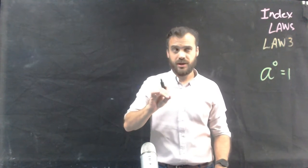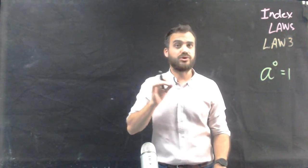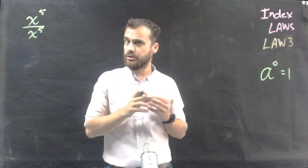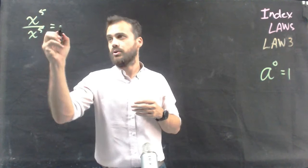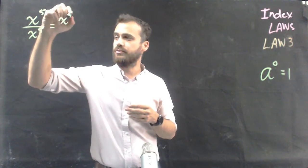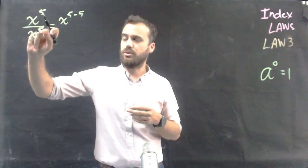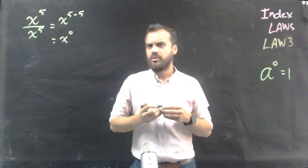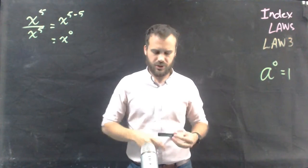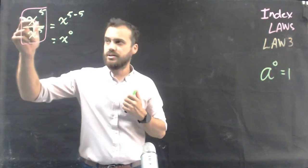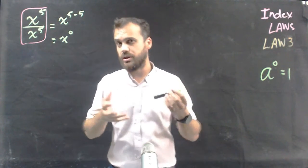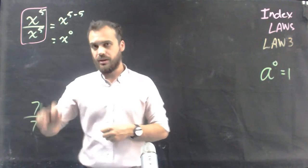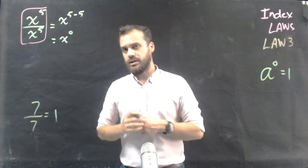The reason for this is pretty simple, and it's related to law 2. Here's an example: x to the 5 divided by x to the 5. Using law 2, we know that equals x to the 5 minus 5 — because you subtract the bottom exponent from the top one — and that gives x to the power of 0. But take a look at the initial question again: it's the same thing on top and bottom, and whenever you divide the same thing top and bottom, the answer will always be equal to 1.